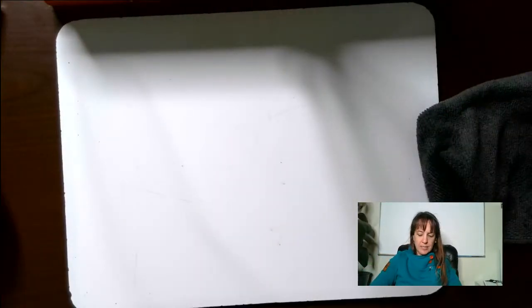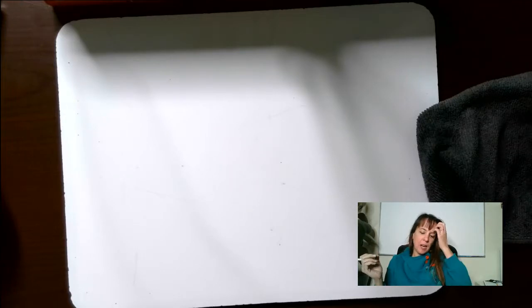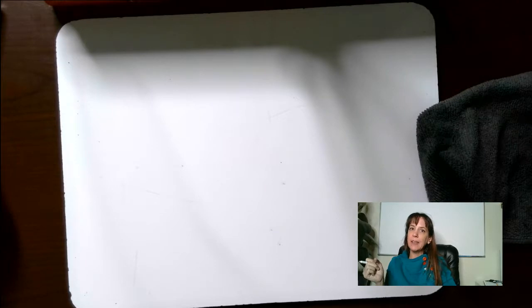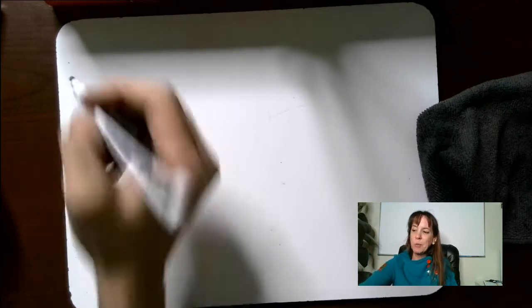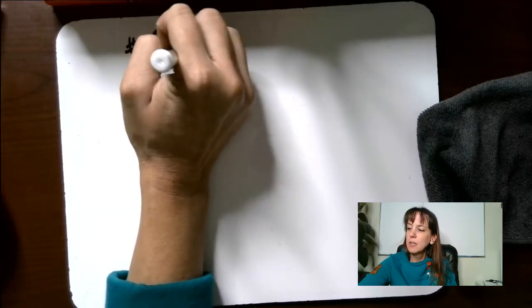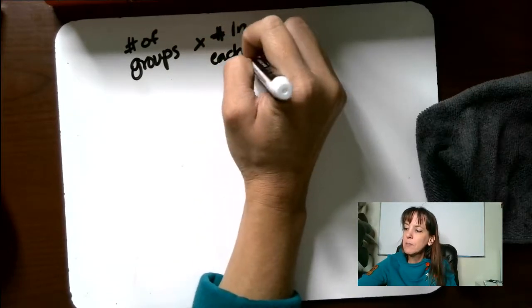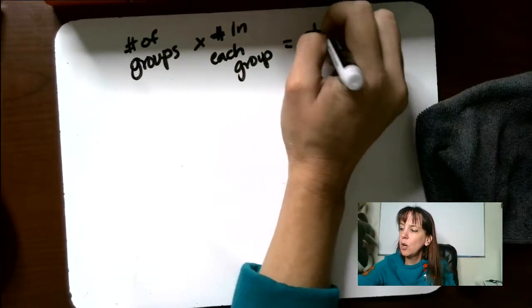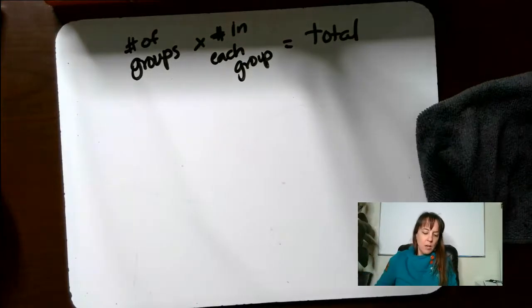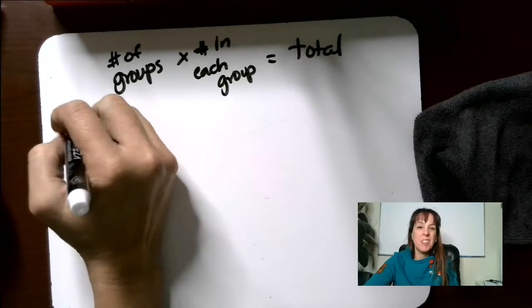So let's look at our next example. I want you to turn to page 69 and there are practice A and B at the top of the page. I want you to practice those, keeping in mind number of groups times number in each group equals our total. So practice A and B. And then once you've got those, pause the video and then come on back.